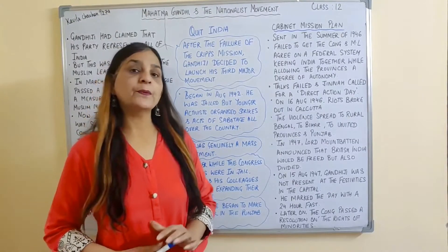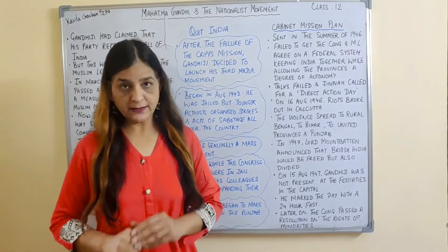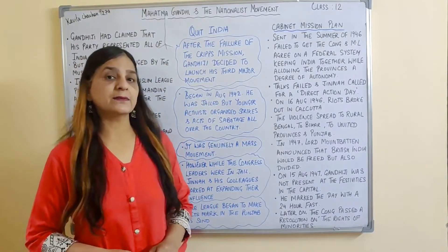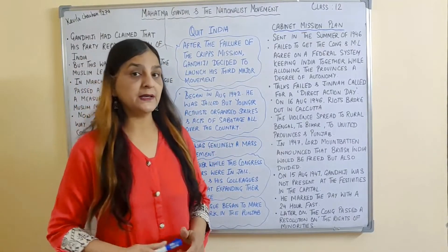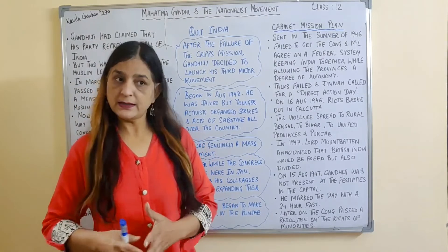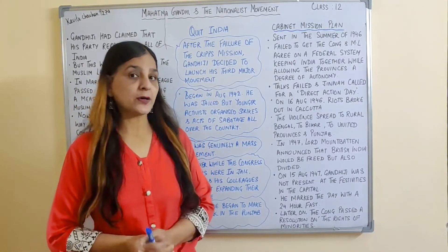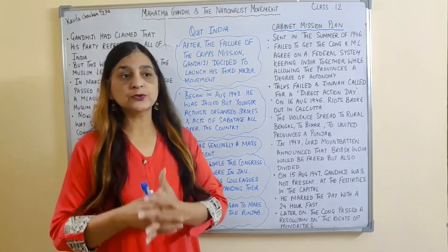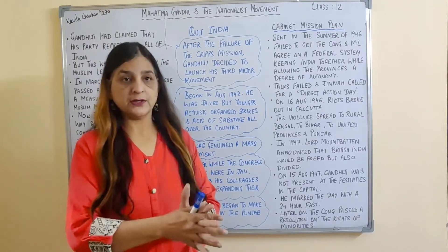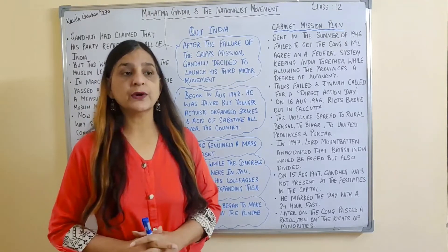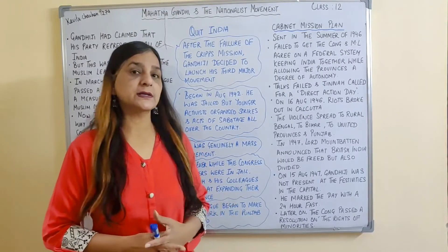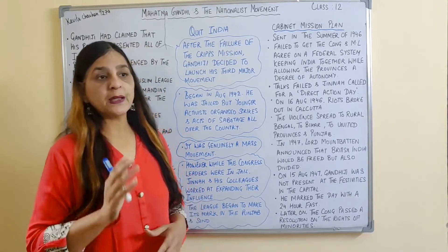The Second World War broke out in September 1939. Mahatma Gandhi and Pandit Nehru were critical of Hitler and the Nazis. They promised Congress support to the war effort if the British in return promised to grant India independence once the hostilities ended.